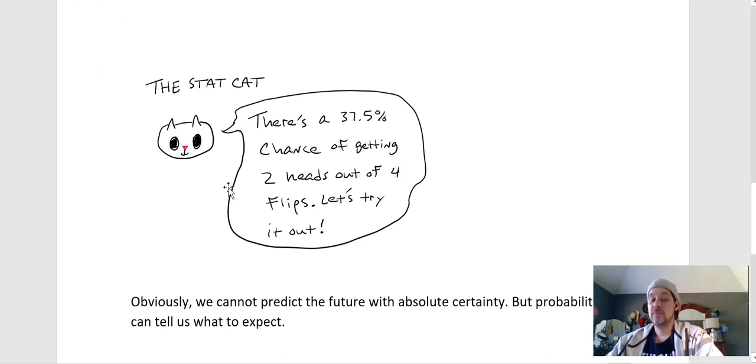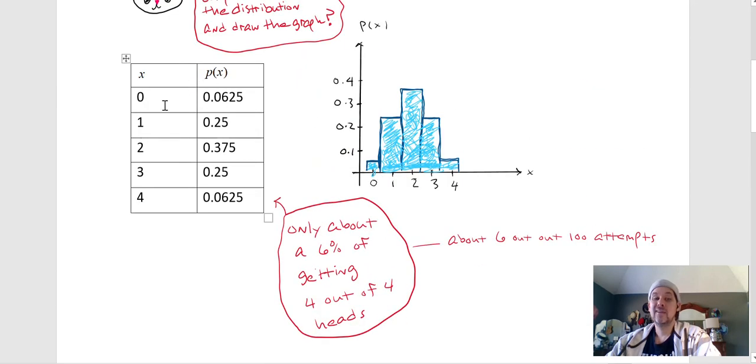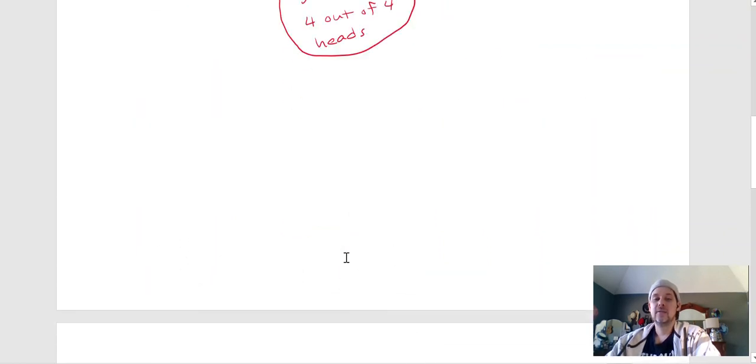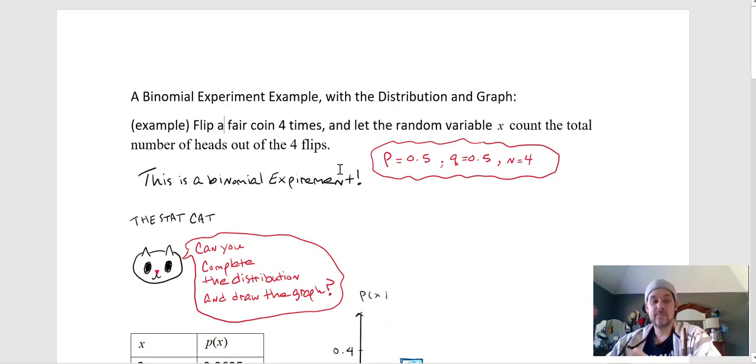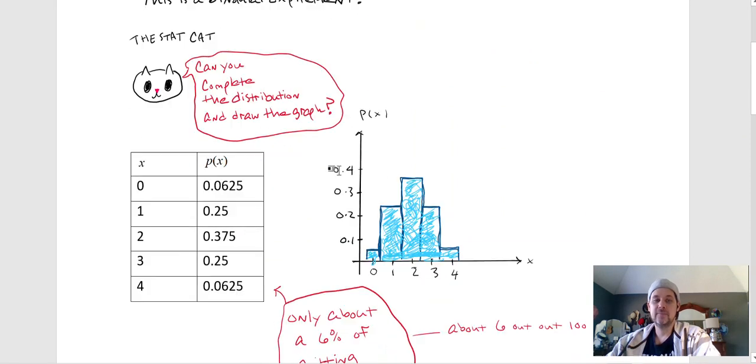I'm not surprised with two out of the four being the most likely occurrence that it did happen twice. I think if I did that more and more and more, it would average out that it would happen about a third of the time. But notice this extremely rare event here, getting no heads or four, didn't happen at all. I really didn't expect it to because it was only a six percent chance.